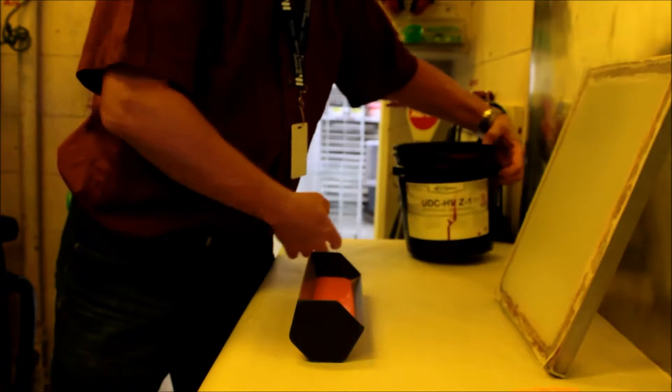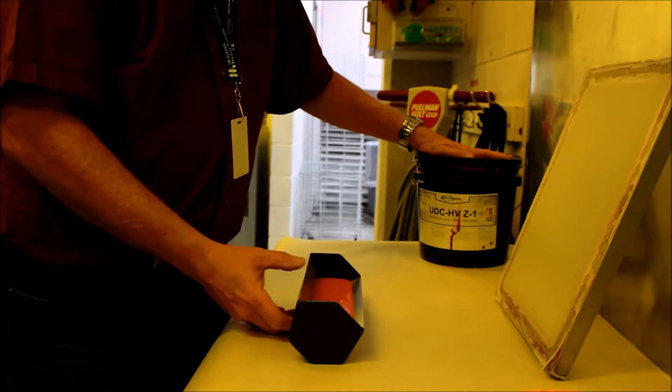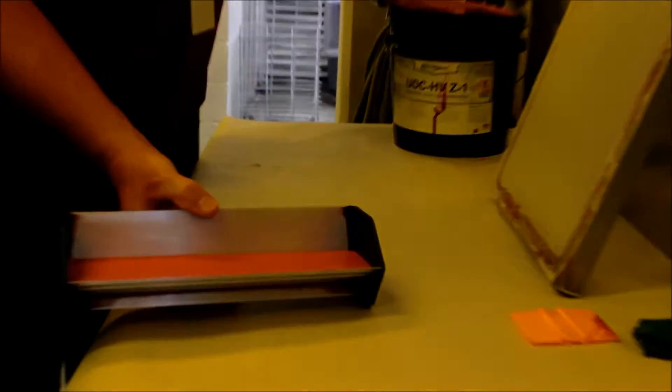Emulsion runs right now about $75 a gallon, so we need to take care of this. Your scoop coater, when it's loaded, will look like this.